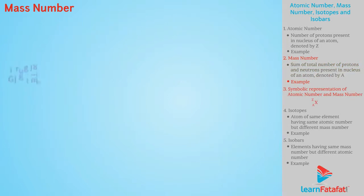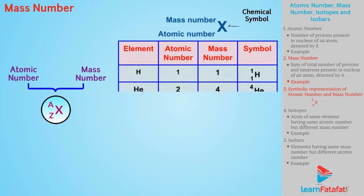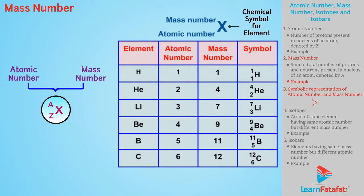For an atom, atomic number and mass number is denoted symbolically as XZA. Following are few elements with their mass number and symbols.